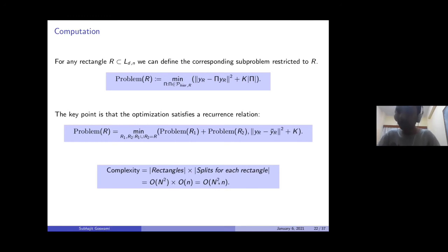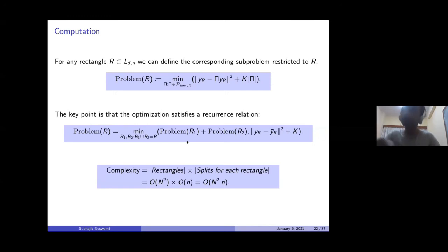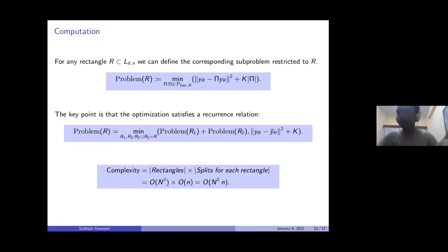Why is dyadic CART faster? Because there the number of comparisons at each step is constant — given a side, there is exactly one dyadic split, so there are a constant number of splits. Also, the number of dyadic rectangles in a d-dimensional lattice of side n is essentially of order N, which gives linear time overall.